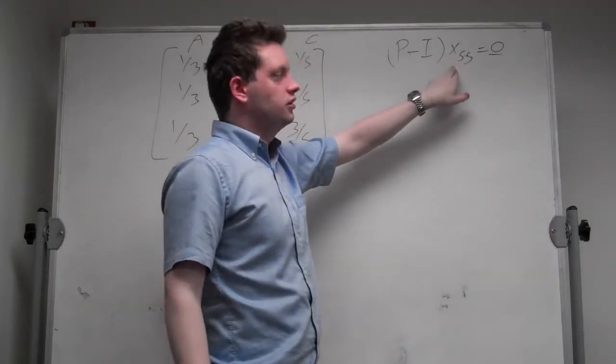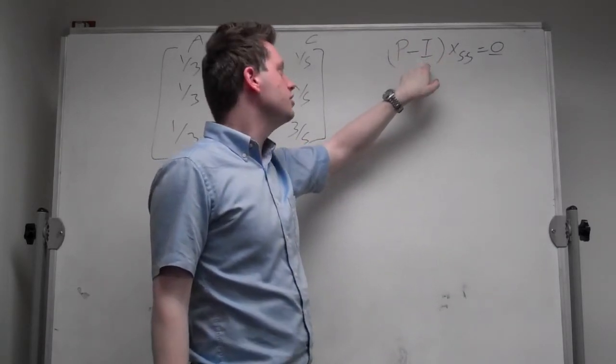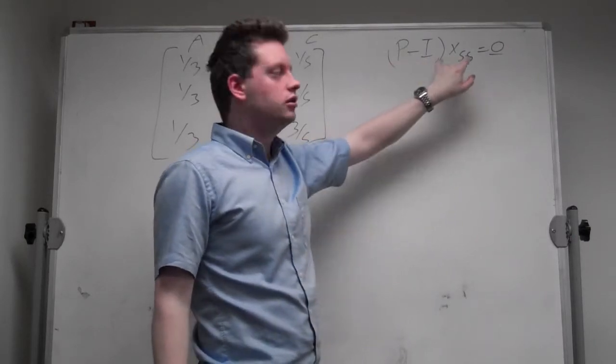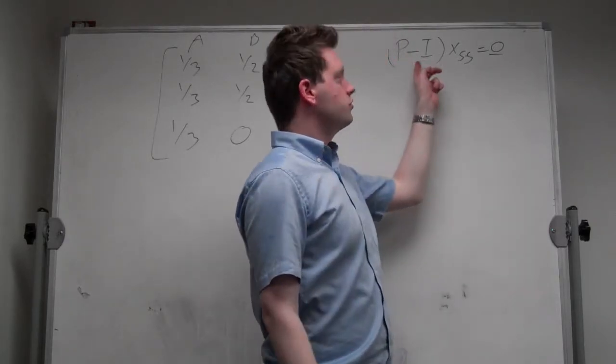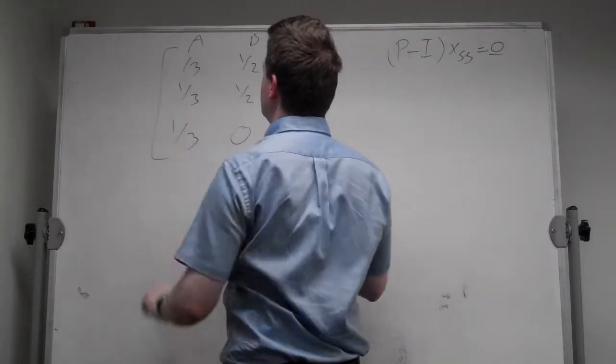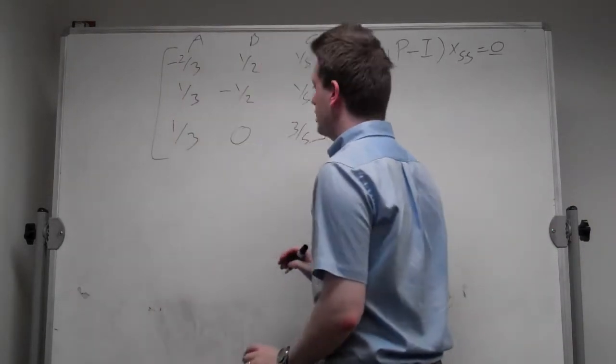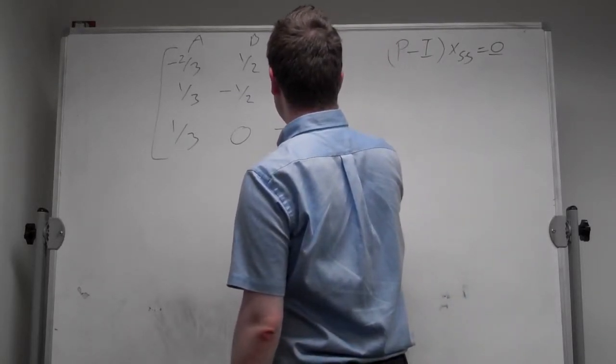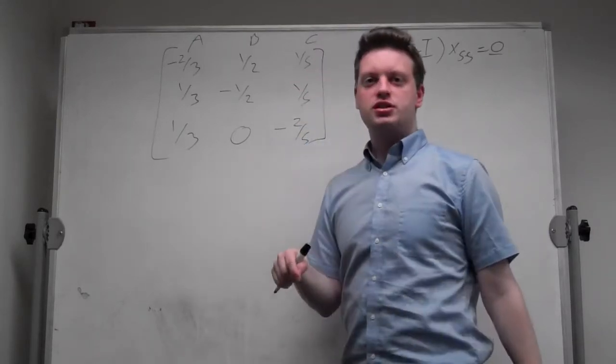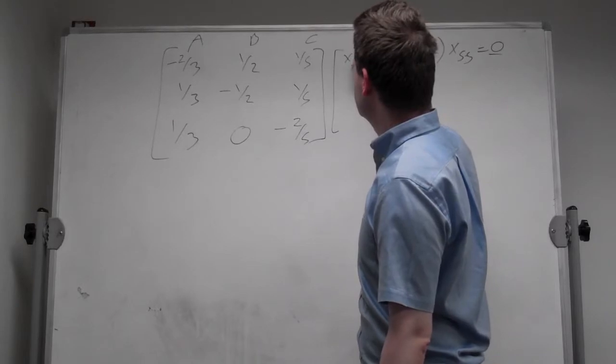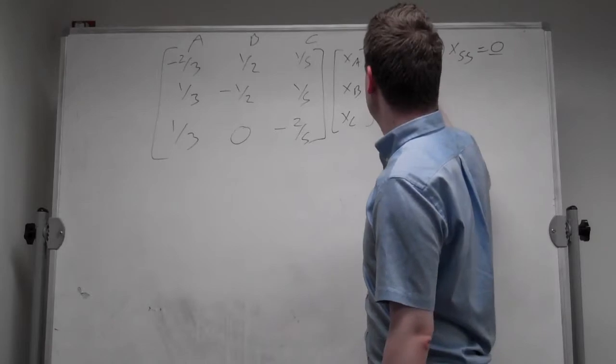We can rewrite that expression as (P - I) times X steady-state equals the zero vector. Because we just subtract the vector X steady-state, and to get dimensions correctly, we need to multiply the identity matrix. We can calculate this expression. Let me rewrite this matrix, subtracting the identity matrix. So the top left becomes -2/3, the middle one becomes -1/2, and the bottom one -2/5. Now, this times some steady-state vector, XA, XB, XC, must be equal to the zero vector.